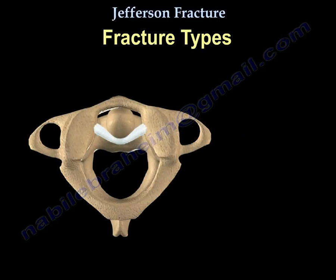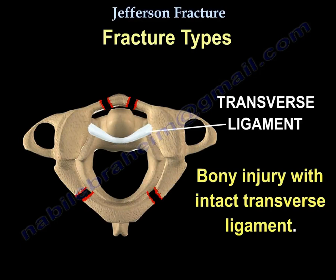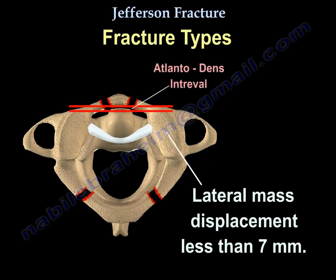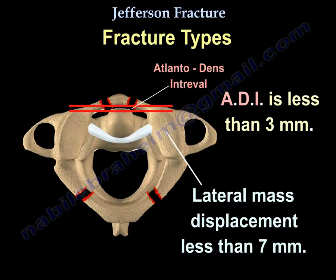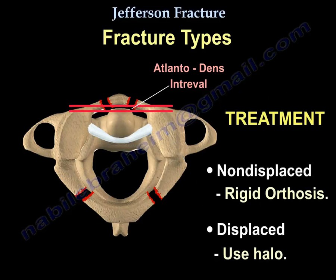Let's check the types of Jefferson Fractures. In the first type, there is a bony injury with an intact transverse ligament. The lateral mass displacement is less than 7 mm. It is a stable fracture and should be treated by rigid orthosis if non-displaced. If the fracture is displaced, you can use a halo.